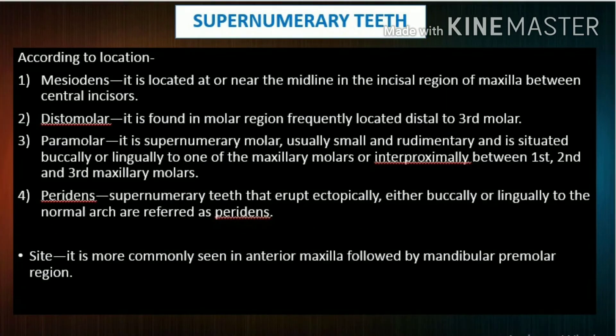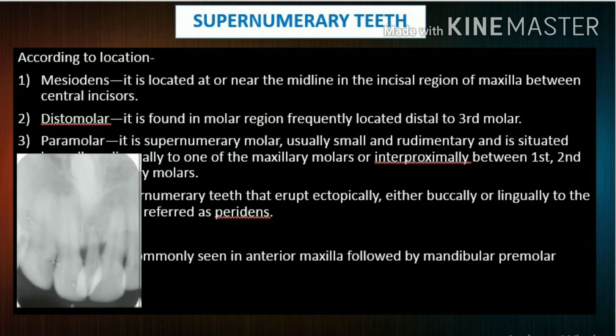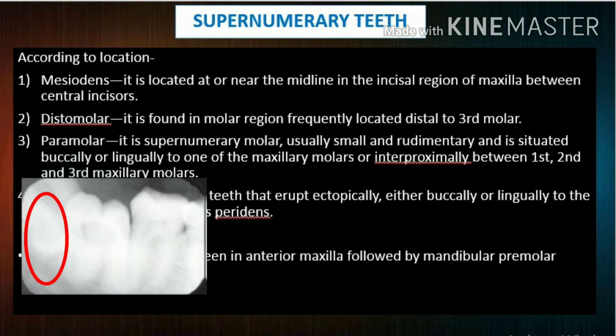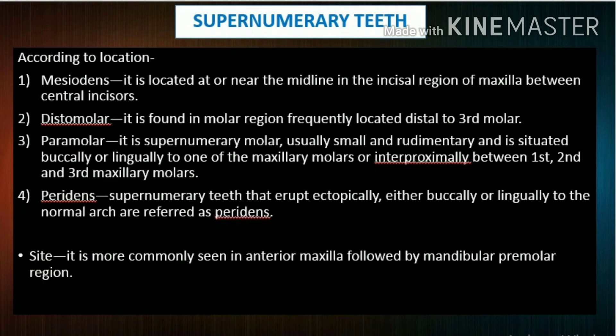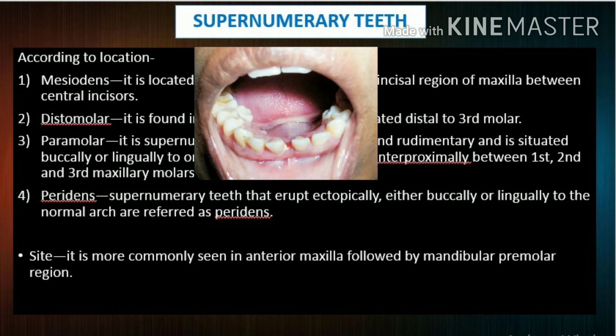According to location: Mesiodens — located at or near the midline in the incisal region of the maxilla, between the central incisors. Distomolar — found in the molar region, frequently located distal to the third molar. Paramolar — a supernumerary molar, usually small and rudimentary, situated buccally or lingually to one of the maxillary molars, or interproximally between the first, second, and third maxillary molars. Peridens — supernumerary teeth that erupt ectopically, either buccally or lingually to the normal arch, are referred to as peridens. The site is more commonly seen in the anterior maxilla, followed by the mandibular premolar region.